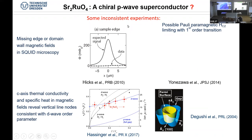Why has the strontium ruthenate story been discussed for 25 years? It was expected from the beginning to be a chiral p-wave superconductor with a px ± i·py state. However, there are several inconsistent experiments. From accountable theory, you would predict surface currents, but microsquid experiments from maybe 50 years ago predicted a signal that was actually much smaller than expected — smaller by a factor of maybe 200 — and that was already a problem for the chiral p-wave interpretation.